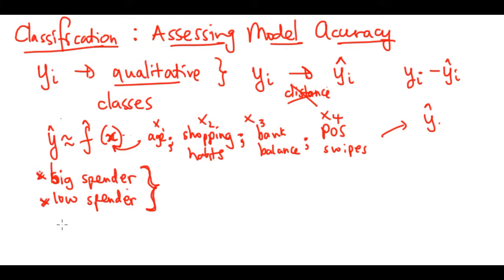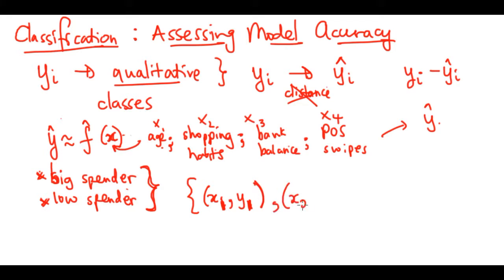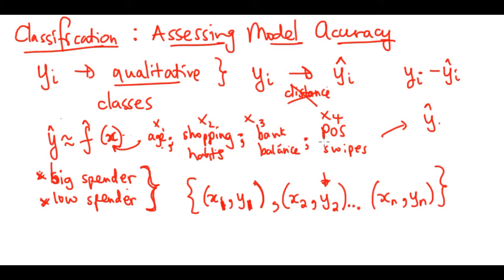Our training observations are structured so that each person has a set of x's — age, shopping habits, bank balance, POS swipes — and a label: big spender or low spender. This continues for person x2, x3, all the way up to person x_n, each with their features and associated y_n label. This training data is what we use to estimate our f, and we know that our y's are qualitative — they are classes.